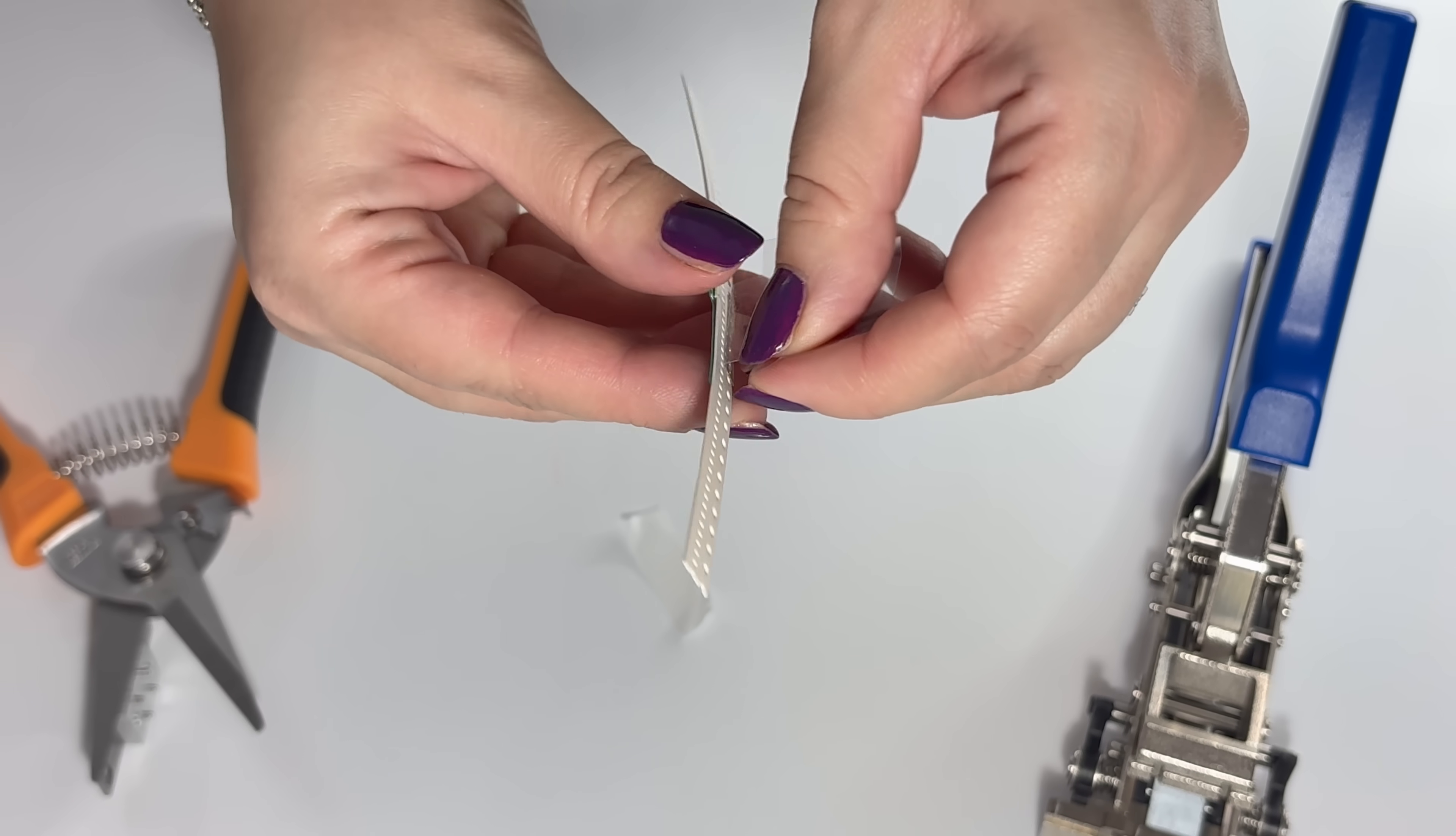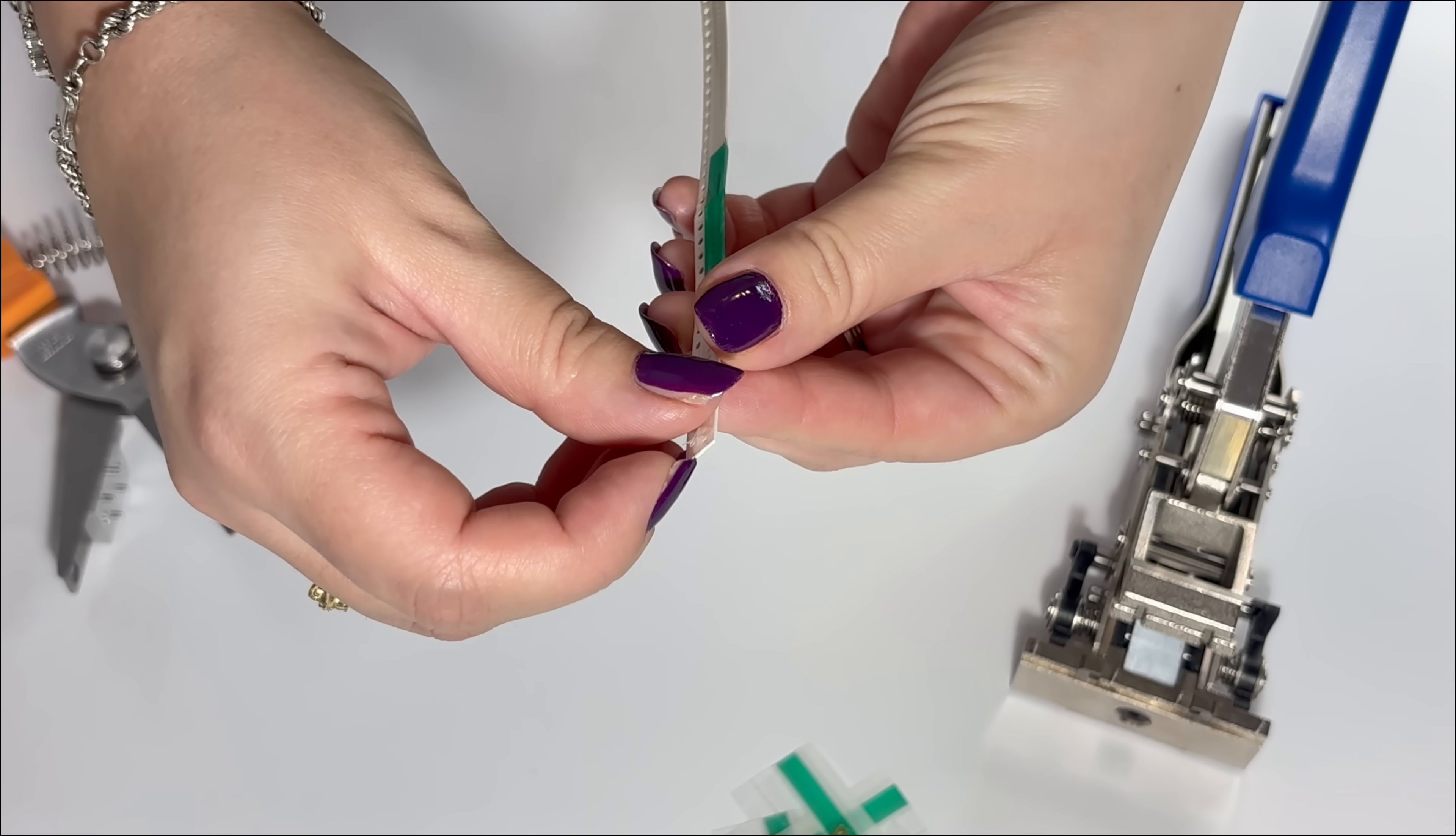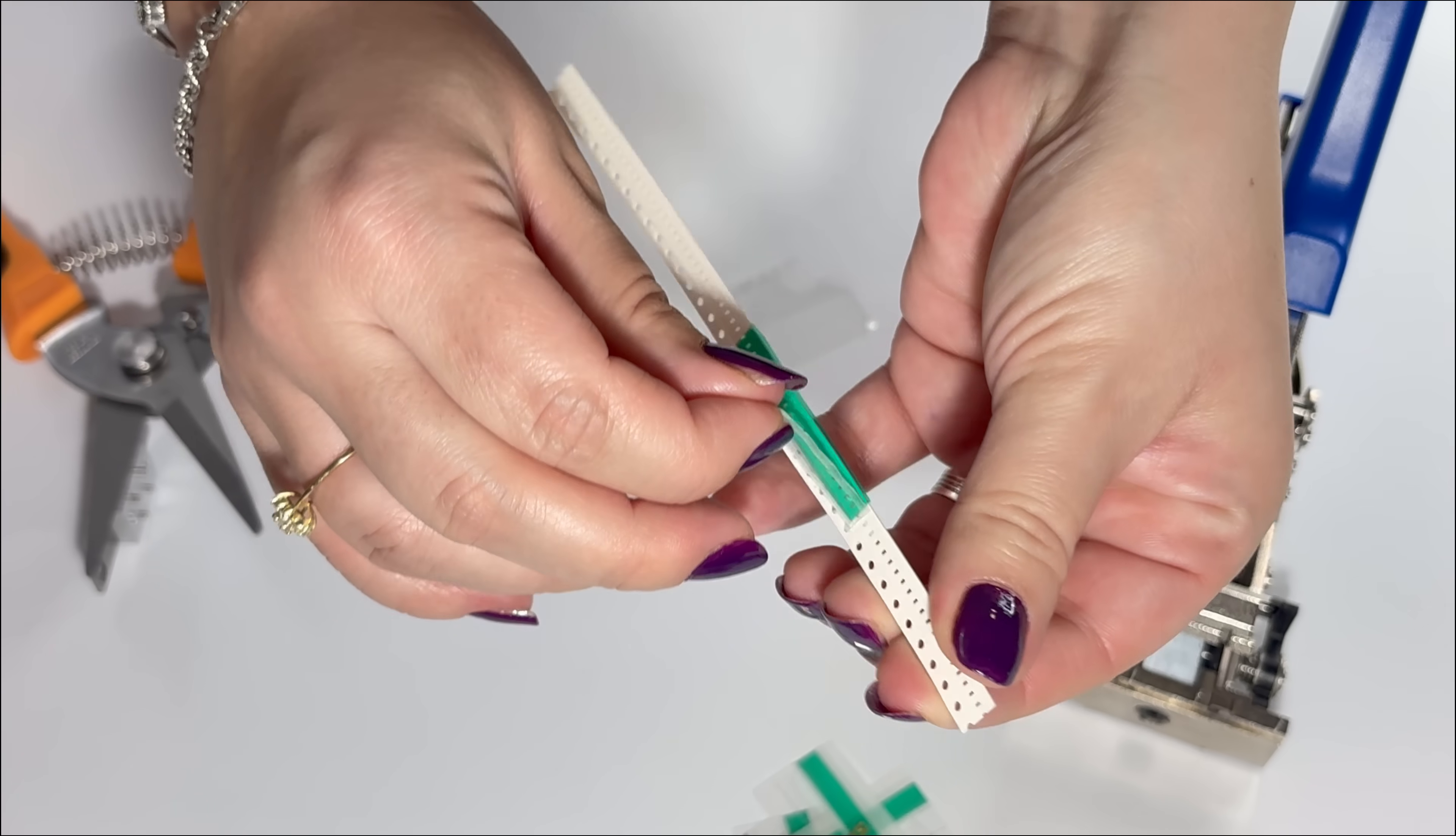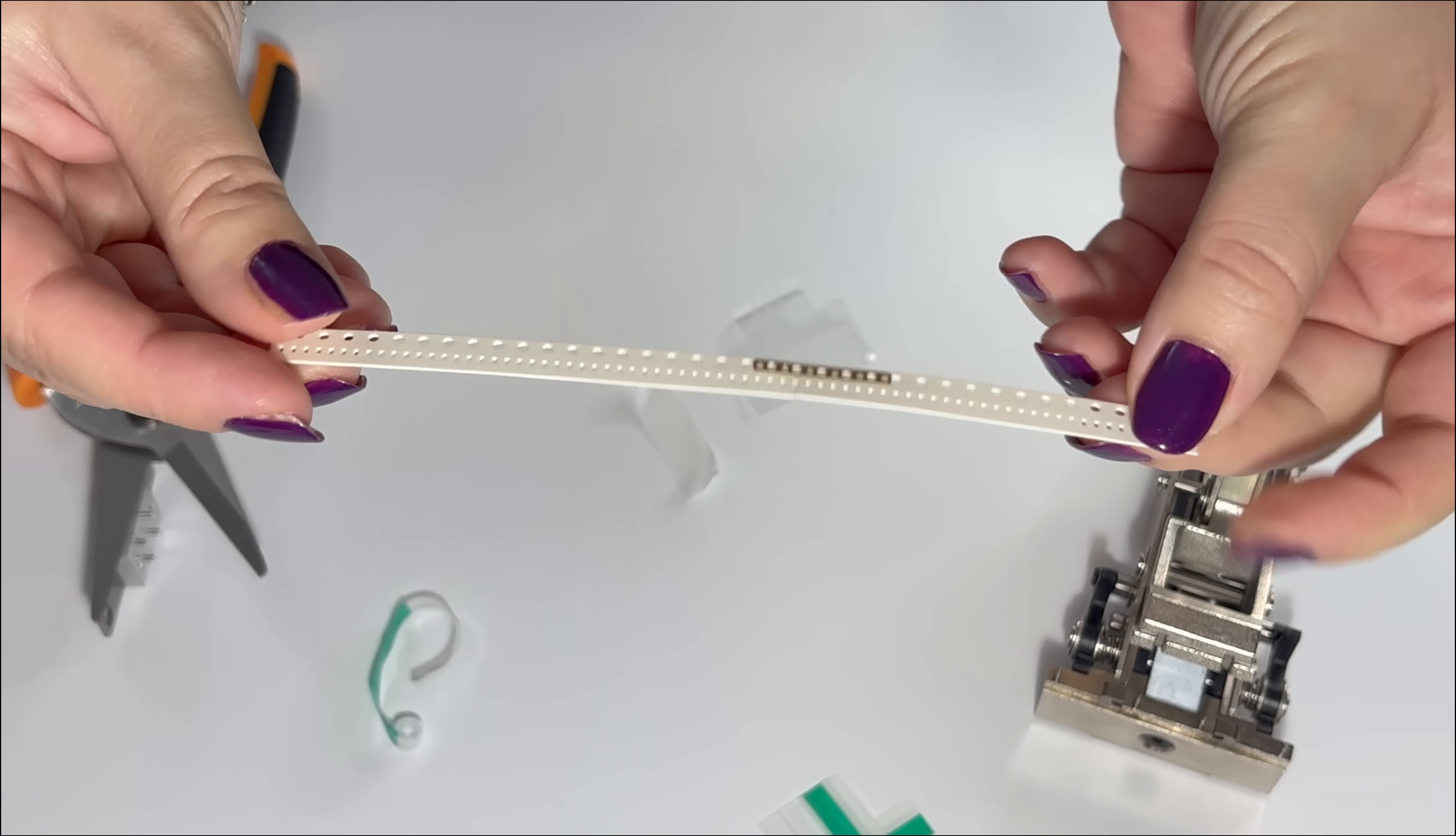Now we have a nice splice with the brass clip on the back. When you pull the cover tape off, you pull both pieces off, but you still have the brass that holds both ends.